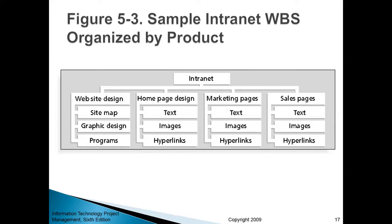There are a couple of ways to do this decomposition. One way is product-oriented decomposition. For example, if the final deliverable is an intranet — an internal website for organizational communication — that product can be broken down into sub-products like design, homepage design, marketing pages design, and sales pages design. Within each sub-product you have specific steps: writing text, creating and uploading images, and fixing hyperlinks.